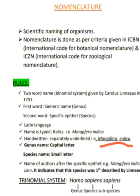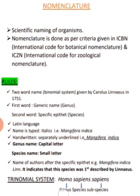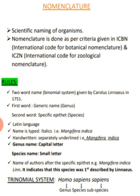The next rule says that the genus — the first word — should always start with a capital letter, and the species name should always start with a small letter. One more additional rule is that we can also add the name of the scientist after the specific epithet. For example, in Mangifera indica, we write 'L.' which is the abbreviated form of Linnaeus, indicating that this species was first described by Linnaeus.